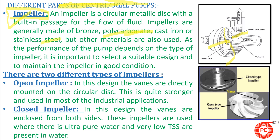Impellers are basically made up of bronze, polycarbonate, cast iron, or stainless steel, depending on the operation for which the pump is selected. Since the pump's performance depends on the type of impeller used, it is very important to select the design and sizing of the impeller properly. If the impeller is selected wrongly, the pump may not deliver as designed. From a design point of view, there are two types: open impeller and closed impeller. An open impeller has blades on a rotating disc and is stronger, mostly used in industrial applications.